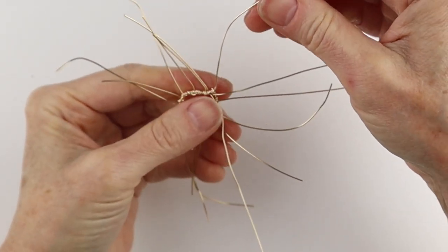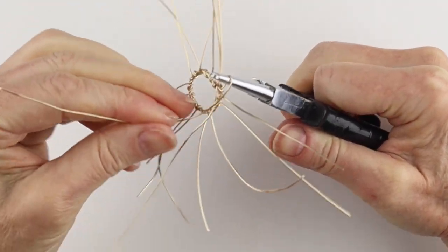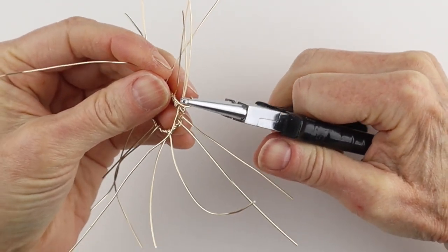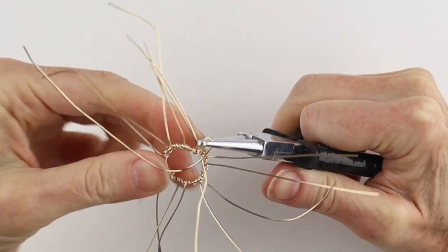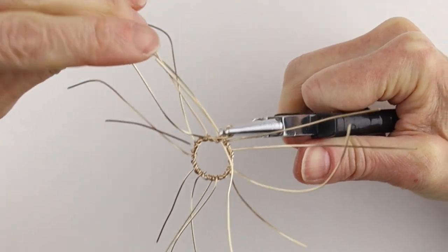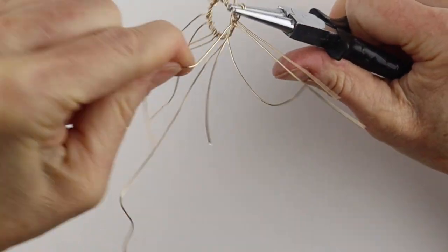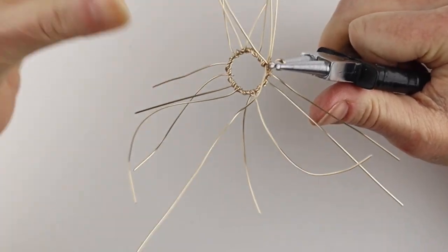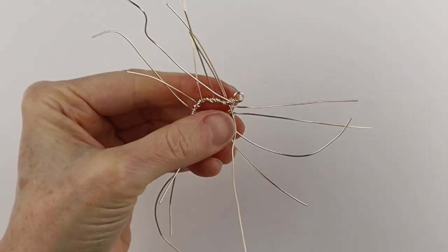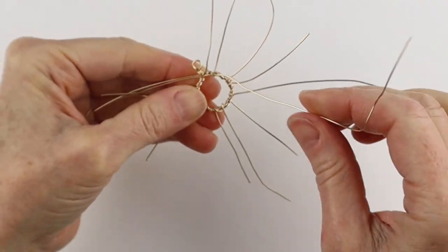So we'll just clip those leftover ends. And then this we can make a loop to hang it up. Take some round pliers or looping pliers. You could make a double ring if you want to make it more solid. And then take the end and wind it around a couple of times so it's secured in place. And then you're going to clip that.